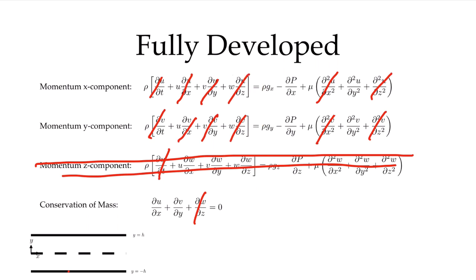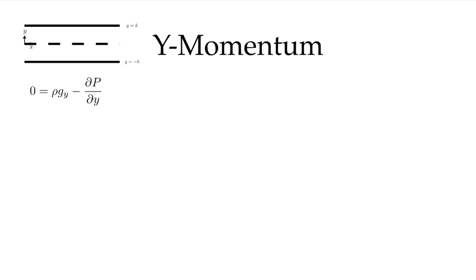What remains is a balance between gravitational body forces, pressure forces, and viscous forces. Our equations are now much, much simpler. gx is zero, so that term also goes away. Let's start with the y-momentum equation: what's left after all cancellations is a balance between the body force and the pressure gradient.